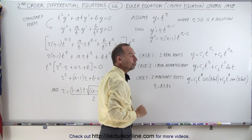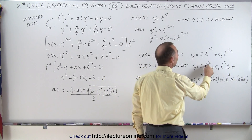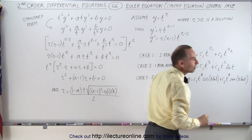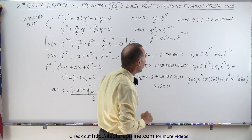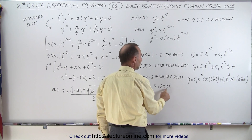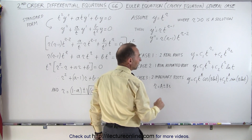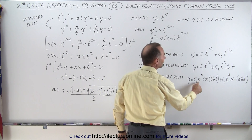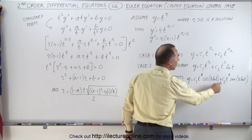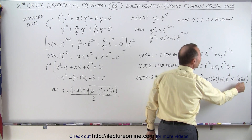If we have a real repeated root, the solution will be c1 times t to the r power plus c2 times t to the r power times the natural log of t. Finally, if we have two imaginary roots expressed as a plus or minus bi — where this a and b are different from the earlier constants — then the solution will be c1 times t to the a power times cosine of b times the natural log of t, plus c2 times t to the a power times sine of b times the natural log of t.